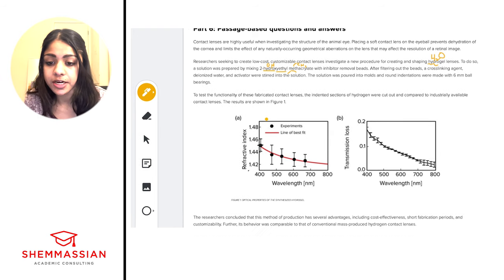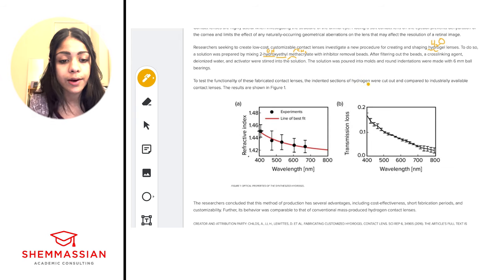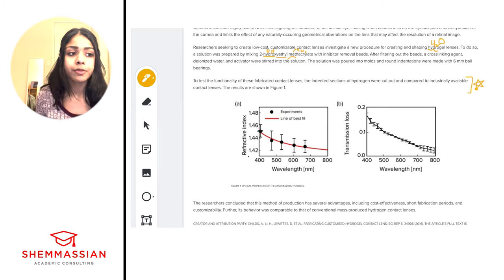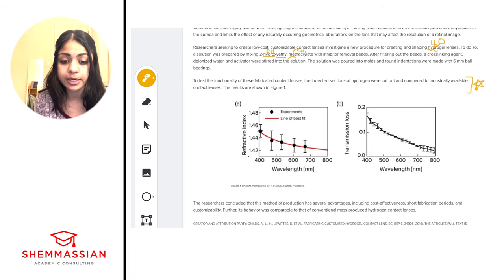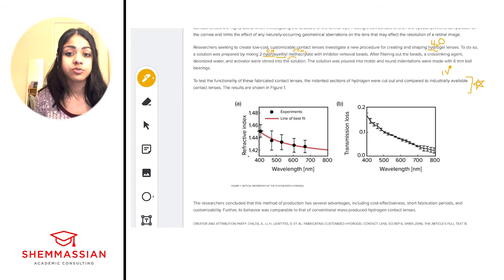To test the functionality of these fabricated contact lenses, the indented sections of hydrogel were cut out and compared to industrially available contact lenses. The results are shown in Figure 1. This introduces the experiment — comparing the new hydrogel contact lenses with industrially available ones. That comparison is the independent variable: what the researchers are manipulating.